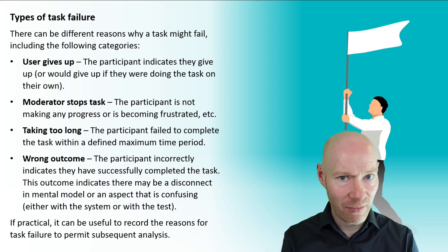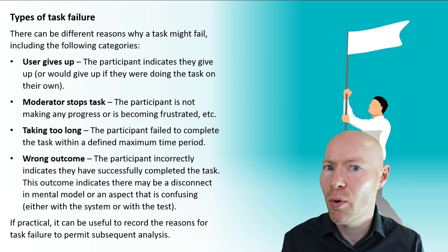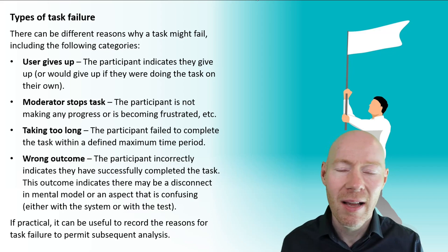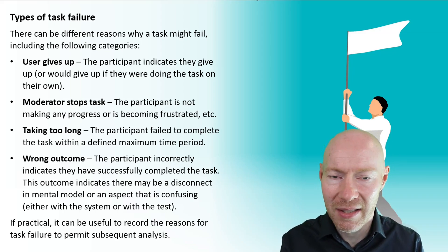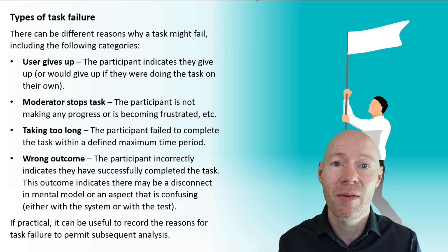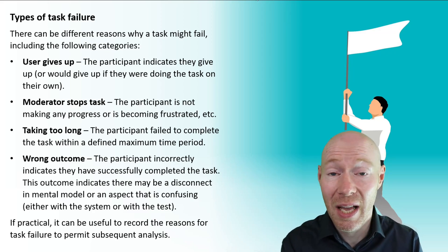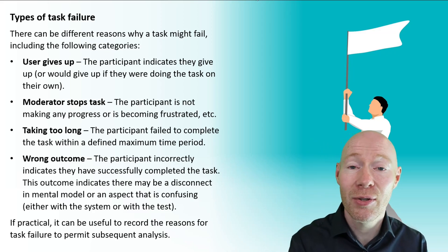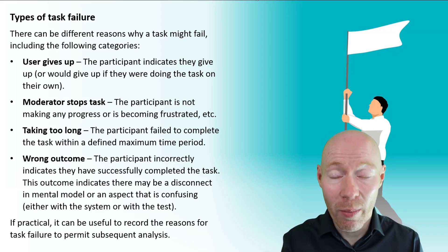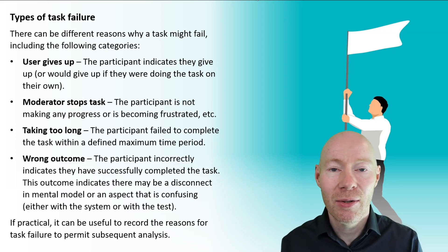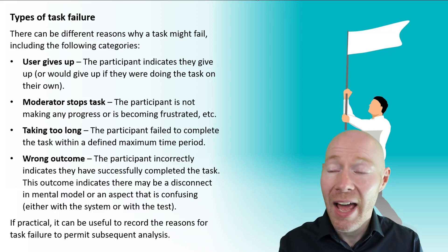The final reason is that the participant has incorrectly indicated they completed the task — from their point of view they've done what was asked, but from the experimenter's point of view it hasn't been done correctly. This raises questions around experimental design, confusing elements, or fundamental differences between the user's mental model and the conceptual model of the software. So where possible, it is a good idea to record the reasons for task failure, as that can help with subsequent analysis.